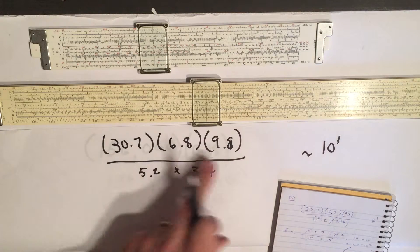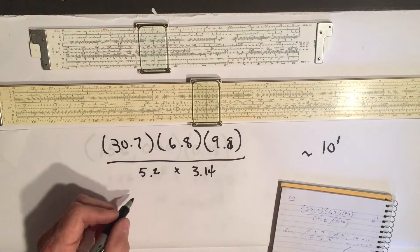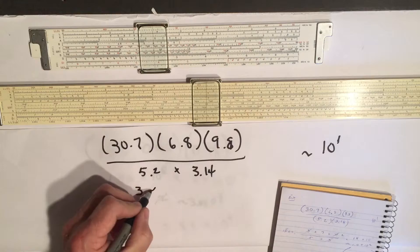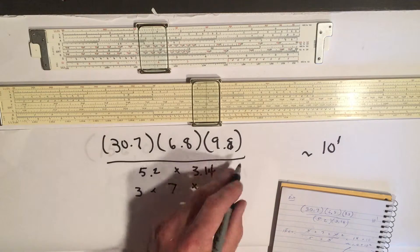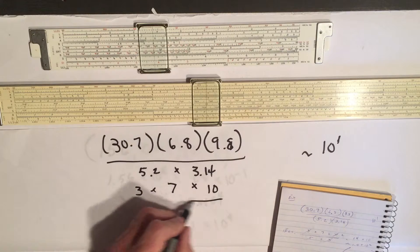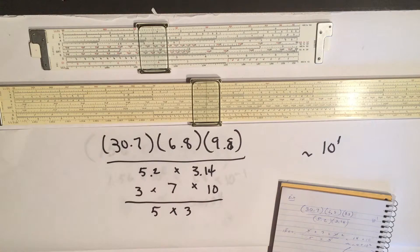Now we just do our estimation process like we did before. It'd be 3 roughly times 7 times 10, because we're real close to 10, divided by 5 times 3.